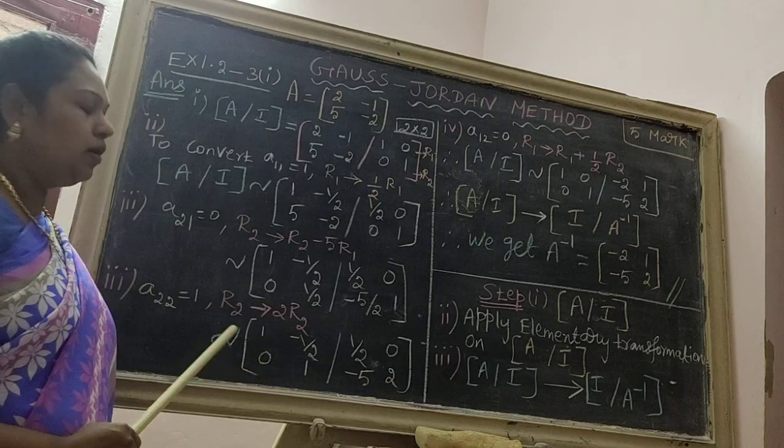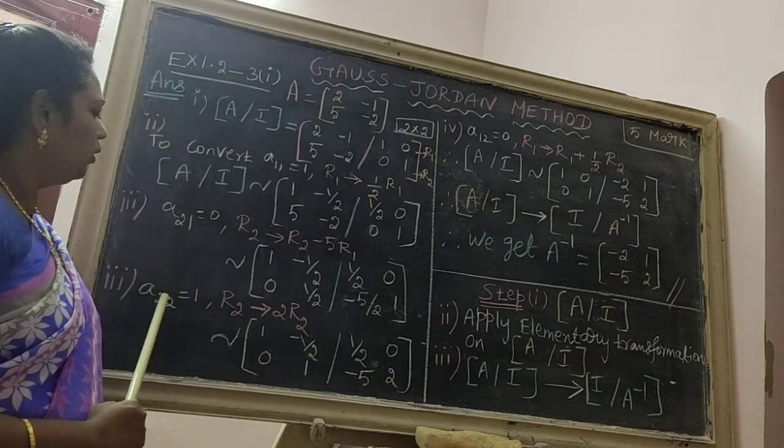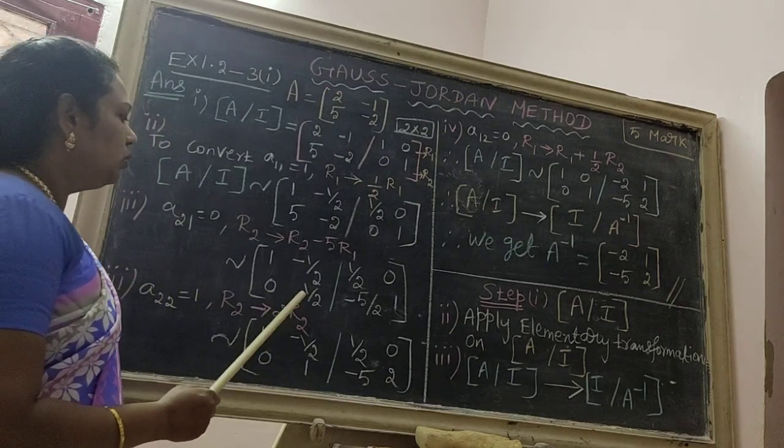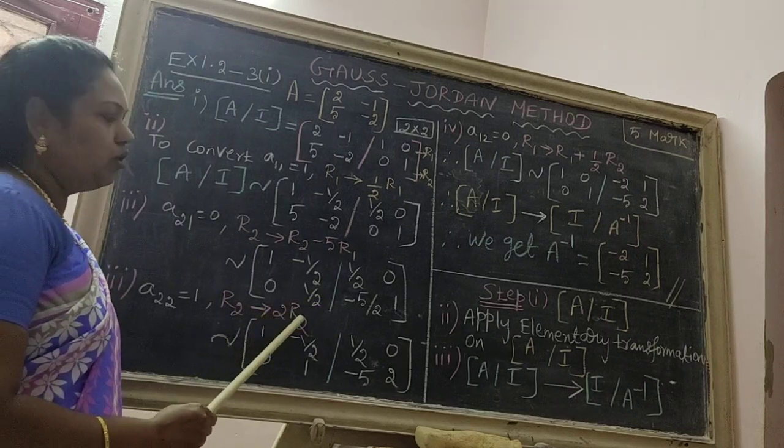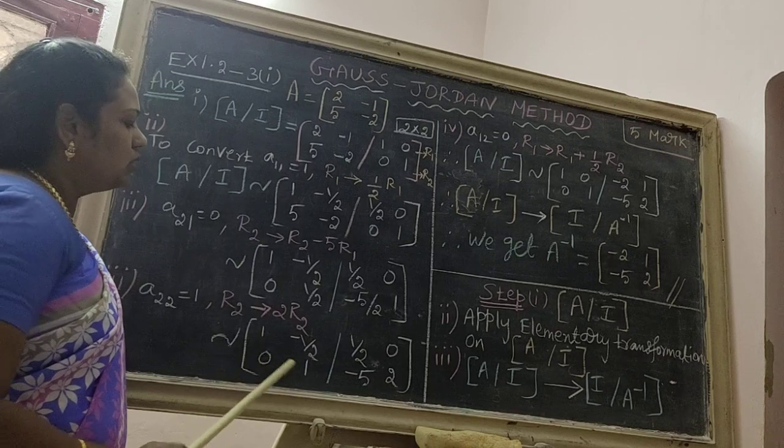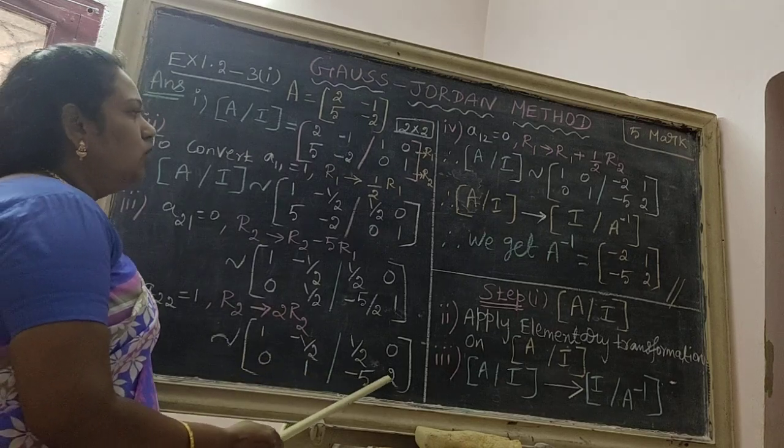Next step, convert A22 equal to 1. A22, here the number is 1 by 2. Therefore R2 implies 2 R2. Therefore we get the answer 0, 1 minus 5, 2.